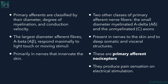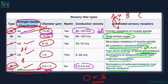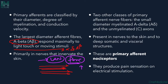The largest diameter afferent fibers, A-alpha and A-beta, respond maximally to light touch or moving stimuli. These fibers have very high conduction velocity and carry complex sensory information. Just as fiber optics carry more data than LAN cables, A-alpha and A-beta are responsible for more complex sensations, including perception of slight touch or small moving stimuli, primarily in nerves innervating the skin.